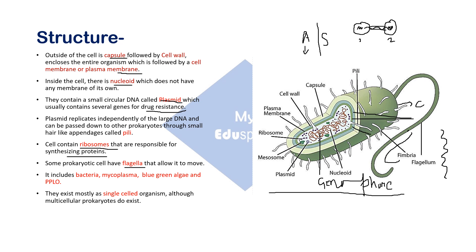Now, mesosomes — you can see the small green bodies. These are mesosomes. They are nothing but foldings of the plasma membrane, which increases the surface area, similar to cristae in mitochondria. Functionally, they aid in aerobic respiration and serve as a site for DNA replication. Examples of prokaryotic cells are bacteria, mycoplasma, blue-green algae, and PPLO — which stands for pleuropneumonia-like organism.